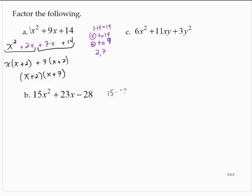15 times negative 28 is negative 420. I need to find a pair of numbers that multiplies to negative 420 and adds to 23. Since I'm multiplying to a negative, I know I have different signs. And remember, when you have different signs, you really find a difference in numbers.